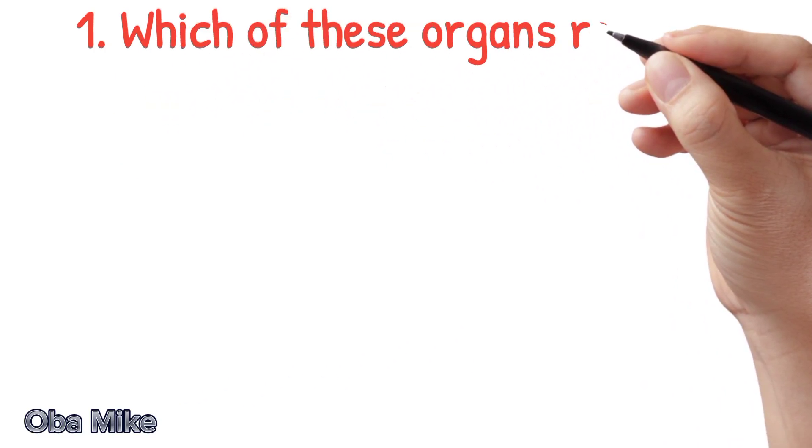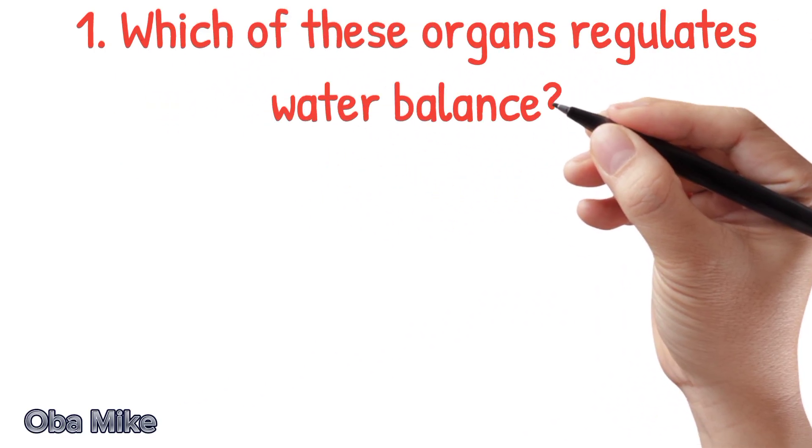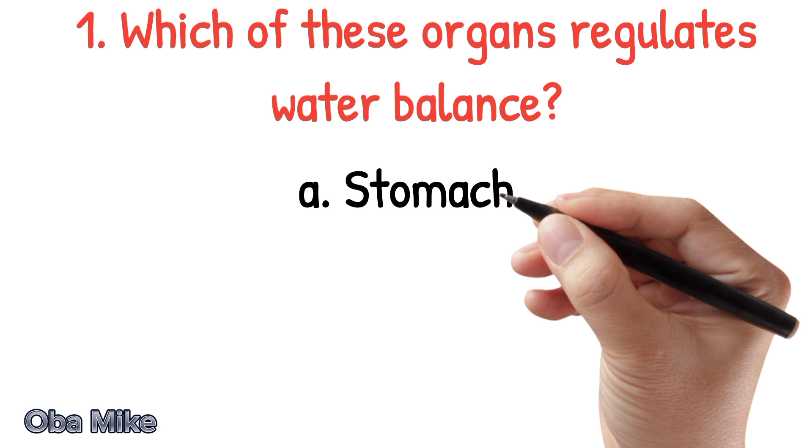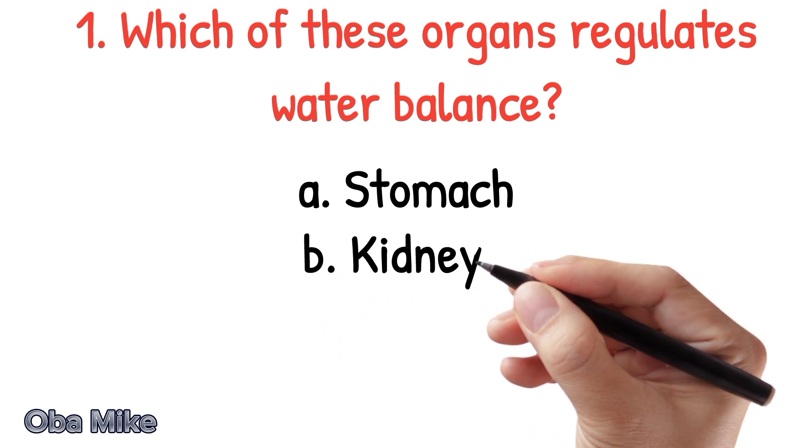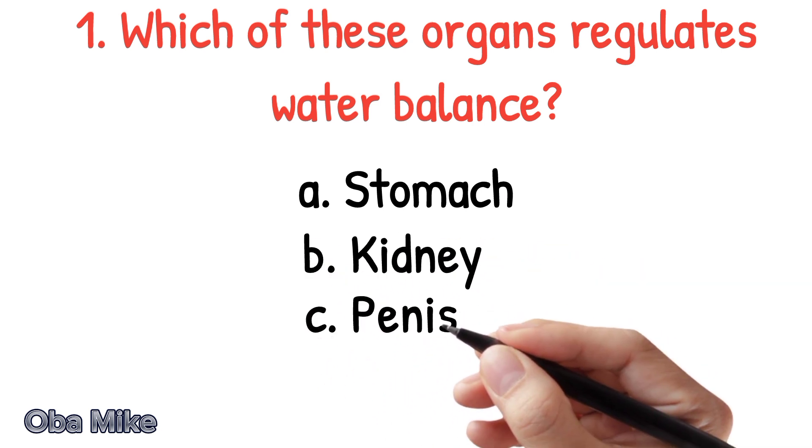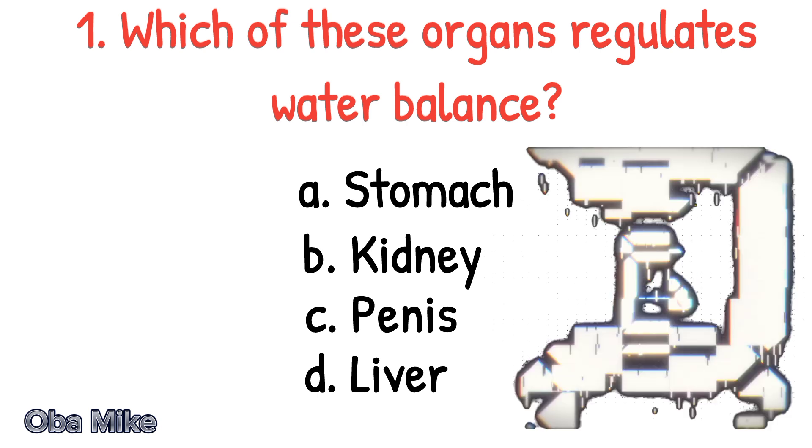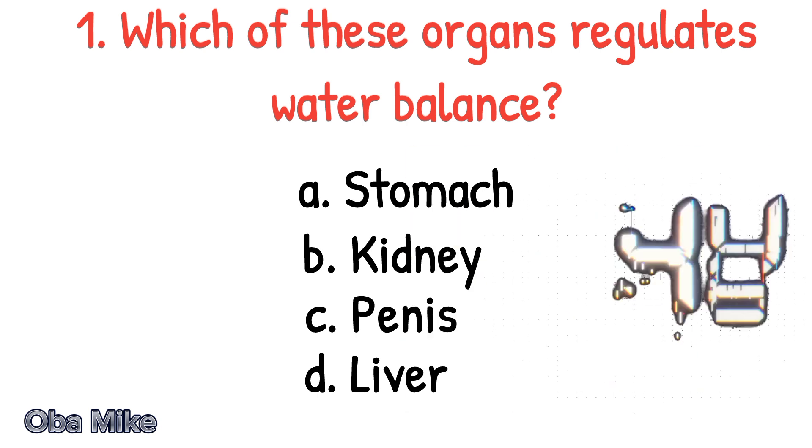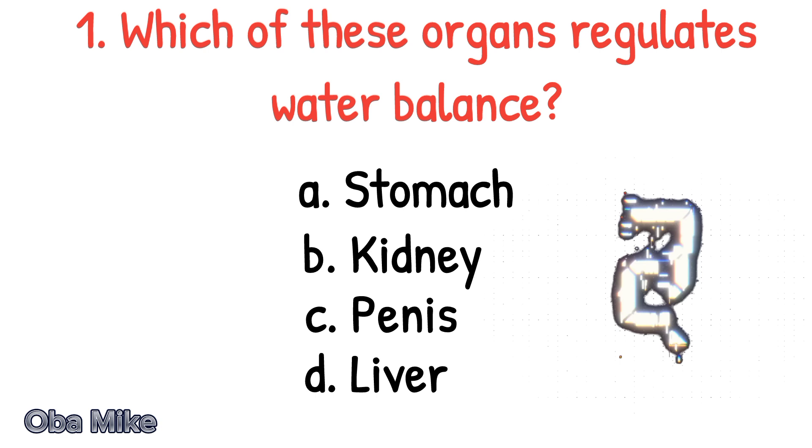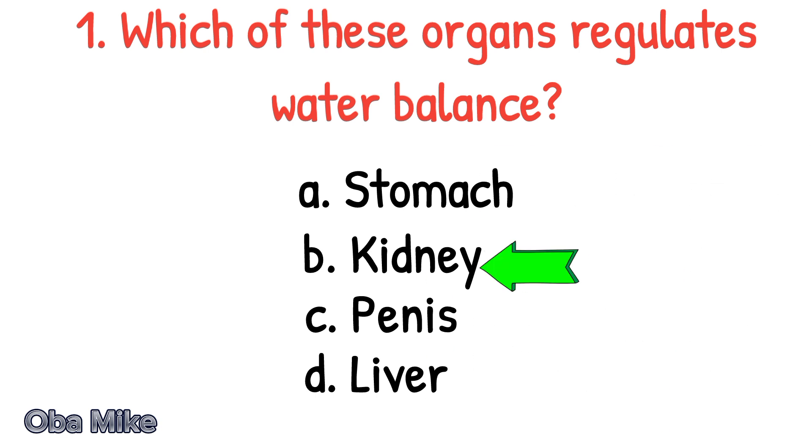Which of these organs regulates water balance? A. Stomach. B. Kidney. C. Penis. D. Liver. The correct answer is B. Kidney.